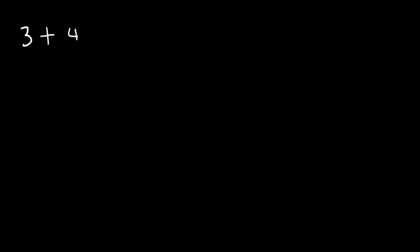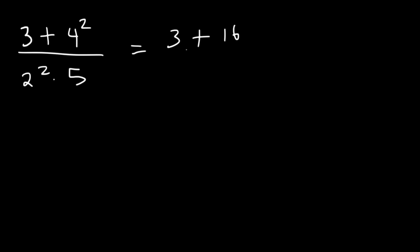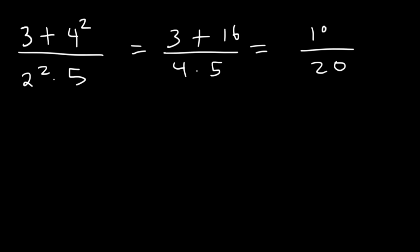Try this one: the quantity 3 plus 4 squared, all divided by the quantity 2 squared times 5. 4 squared is 16, and 2 squared is 4. Then 4 times 5 is 20. 3 plus 16 is 19. So the answer is 19 over 20.